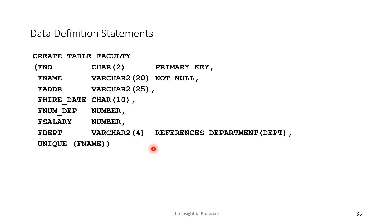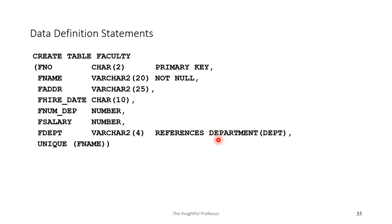The faculty table: each row represents one faculty member who works at the school, and the faculty member is uniquely identified by a faculty number. Each faculty member must have a name. We have an address, the date of hire, the number of dependents, and the salary. Then we have a foreign key — F_department — that references the primary key of the department table. Each department employs many faculty; a given faculty member is employed by one department. Additionally, we chose to say that the faculty name must be unique — you cannot have two faculty members with the same name, specified as a table-level constraint.